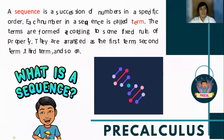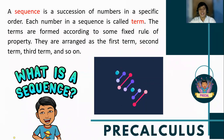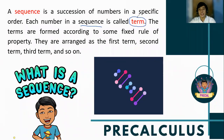We can also define a sequence as a succession of specific numbers in order, where they follow a certain rule, formula, or property. Every element in the sequence is referred to as a term, and they are arranged accordingly as the first term, the second term, the third term, and so on.